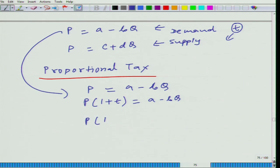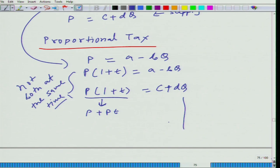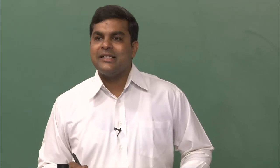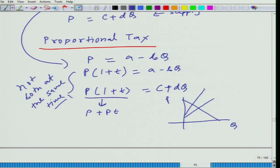When the proportional tax is imposed on the seller, P should be replaced on the supply side — but only one side at a time, not both simultaneously. On the supply side C plus DQ, if you substitute P into this equation, the shift is not going to be the same at all price levels. The higher the price, the higher the shift. So your supply curve shift will involve a rotation, not just a parallel shift.